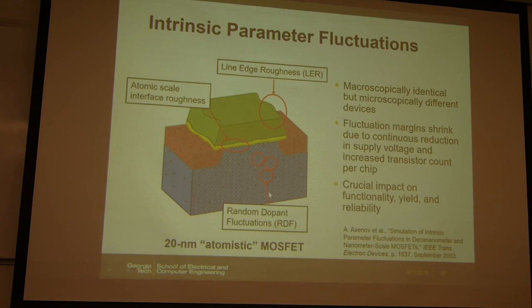The atomistic view of the MOSFET at today's scaled technology nodes shows non-ideal, non-uniform, and rough surfaces. This is how the real transistor looks at the atomic level — very different from the idealized picture.